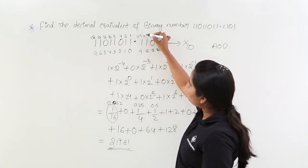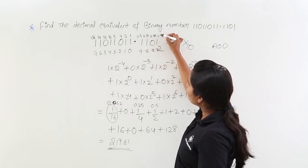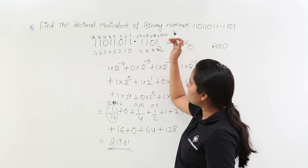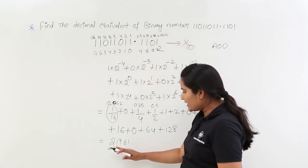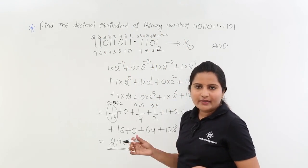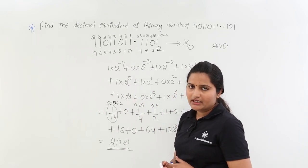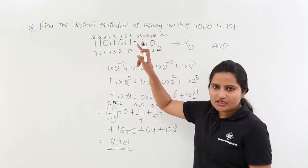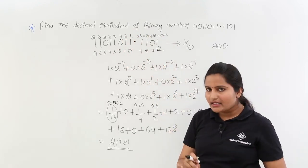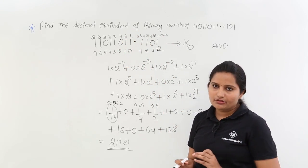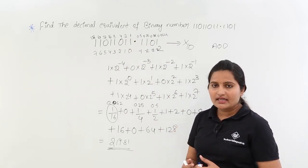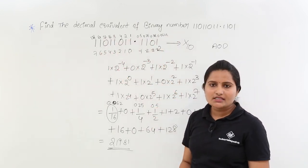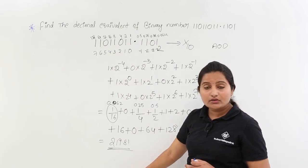For the fractional part, use 0.5, 0.25, 0.125, 0.0625 and add the values wherever there is a 1. This is a half-minute process using this shortcut, whereas the full procedure takes nearly 5 minutes in an exam. For binary to decimal conversions, always use this 2-powers shortcut. For octal to decimal or hex to decimal, you need to use the multiplication procedure or other methods.